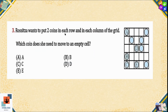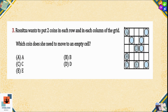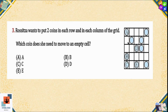Question number three: Rositza wants to put two coins in each row and in each column of the grid. Which coin does she need to move to an empty cell? There are two coins in the first, second, and third rows, but one coin in the fourth row and three coins in the fifth row. Column-wise, there are three coins in the first column and one coin in the second column, but two coins in the third, fourth, and fifth columns. She needs to move one coin from the first column and first row — that is coin C — and place it beside coin B. This gives two coins in the first and second columns and two coins in the fourth and fifth rows. Option C is the correct option.